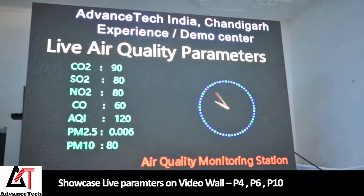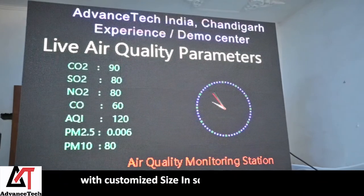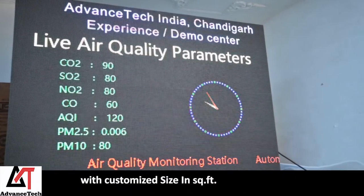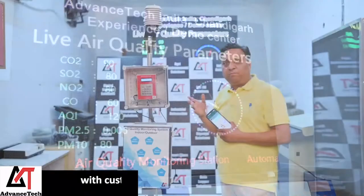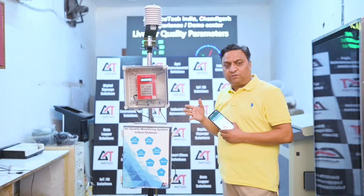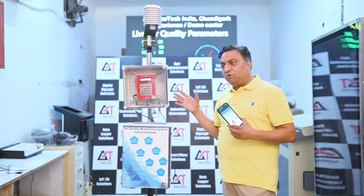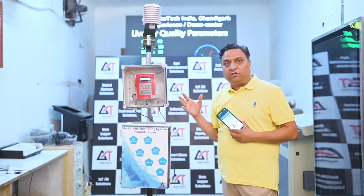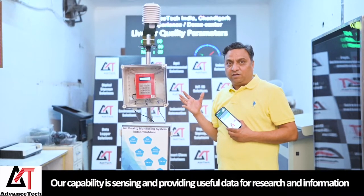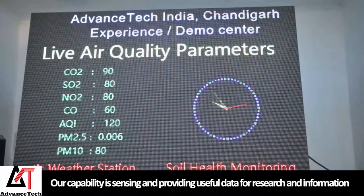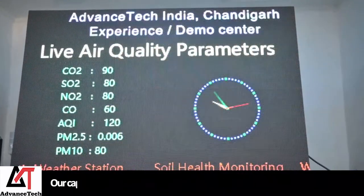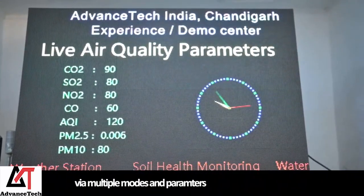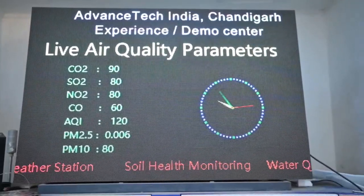The same data you can also see on an outdoor LED screen. These outdoor LED screens can be used for displaying real-time data for public convenience. The whole scenario is a combination of an environmental monitoring system, which could be a weather monitoring system as well as an air quality monitoring system.